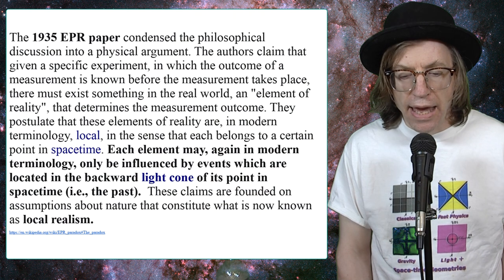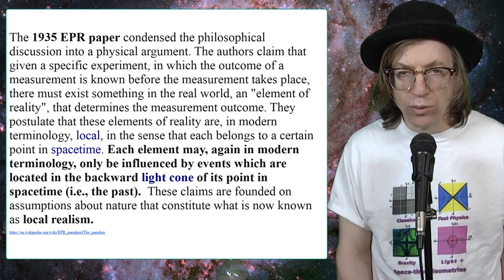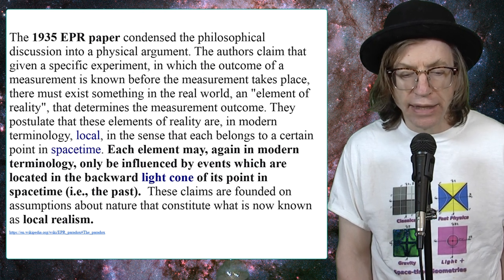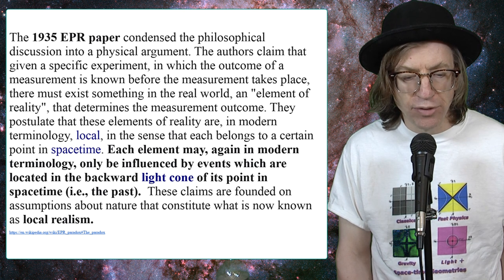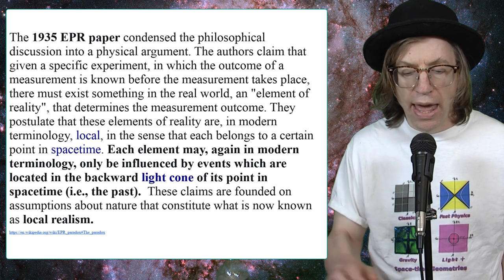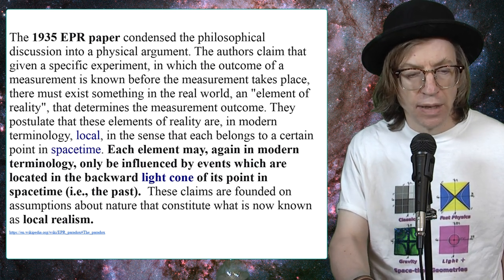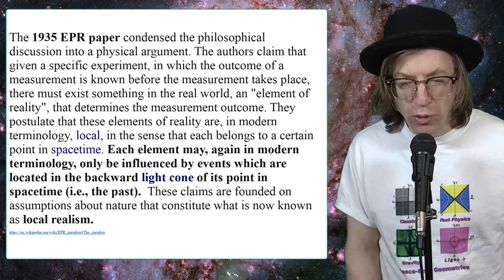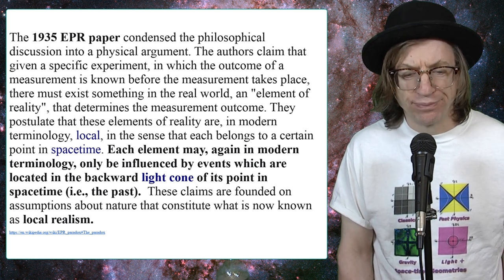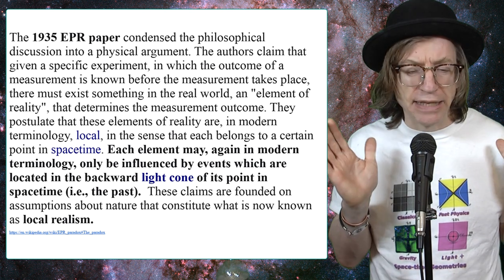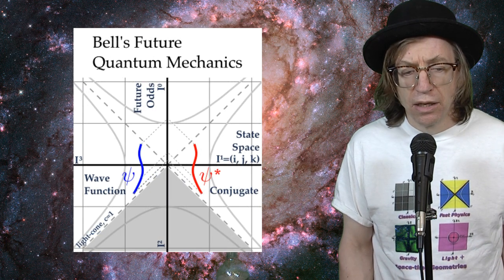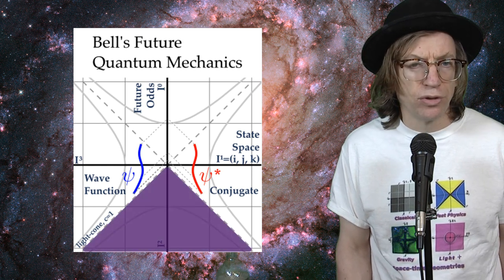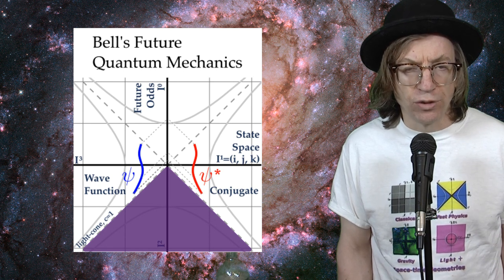So this is my proposal about Bell's future quantum mechanics. So here's the line I want to quote. Each element may only be influenced by events which are located in the backward light cone of its point in space-time. These claims are found on the assumption about nature that constitutes what is known now as local realism. It was that clause only influenced by events that are located in the backward light cone that caught my attention. I'd actually been thinking about the wave functions as being space-like for a bit of time. But if there are no hidden variables, as shown by experiments, why don't we just remove any possibility of those local events influencing quantum experiments?